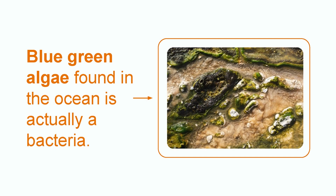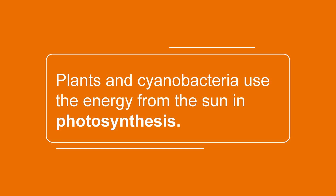For example, blue-green algae found in the ocean is actually a bacteria. If we want to characterize it correctly, it is a cyanobacteria that has chlorophyll and is able to photosynthesize just like plants. Let's learn more about plants and cyanobacteria and how they photosynthesize.